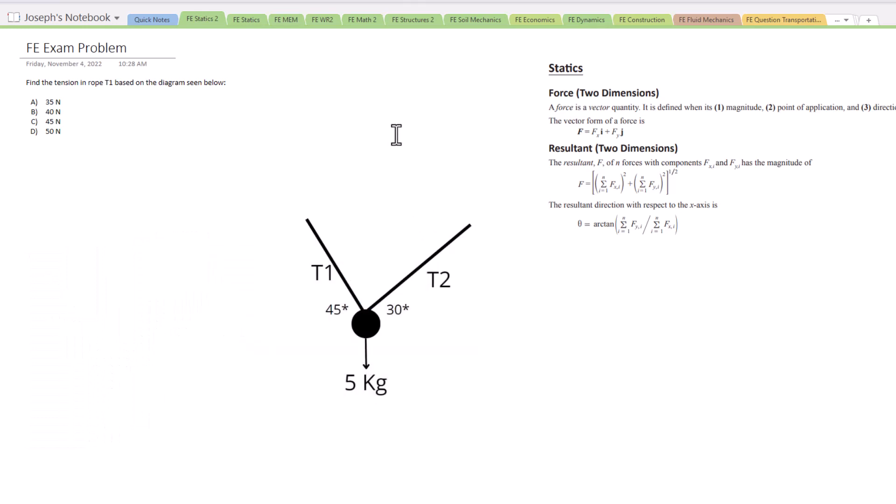So find the tension in rope T1 based on the diagram seen below. We have T1, T2, those are the different tension values in the rope. We have a 45 degree angle and a 30 degree angle, and then a 5 kilogram mass here that's pulling both the ropes down. And so we want to find the tension in this rope here, T1.